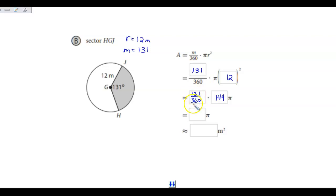I'm going to take 131 divided by 360 and multiply that by 144. So 131 divided by 360 times 144, and that's going to give me 52.4 pi. So that's in terms of pi.